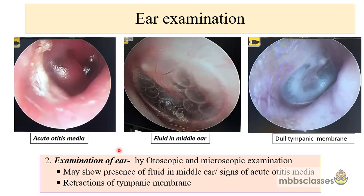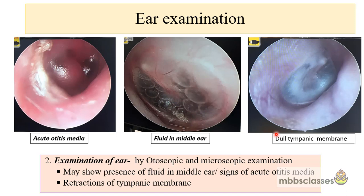Since adenoid invariably causes ear symptoms, we must always examine the ear — even when the patient is not complaining of ear symptoms. Adenoid can cause recurrent attacks of acute otitis media. The tympanic membrane may appear congested and bulged, particularly in the posterior inferior quadrant. Sometimes there may be fluid in the middle ear with air bubbles visible. In cases of chronic eustachian tube obstruction, there may be retraction or a dull tympanic membrane.